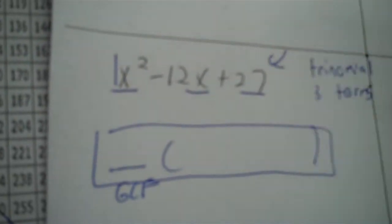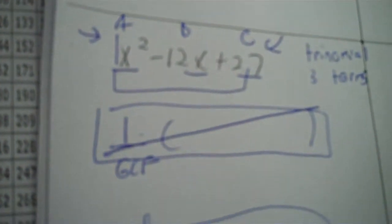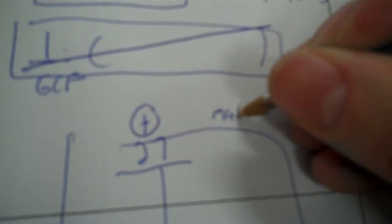Do I have an x on the last number? I don't. Do I have a negative in front? No. The coefficients 1, 12, and 27 would only be in the first row, so if the GCF is just 1 with no negative and no x, I'm not going to bother writing it. A times C: 1 times 27 is 27. Since it is positive, the signs match — so I put two of the same sign, either both negative or both positive, and add to negative 12.